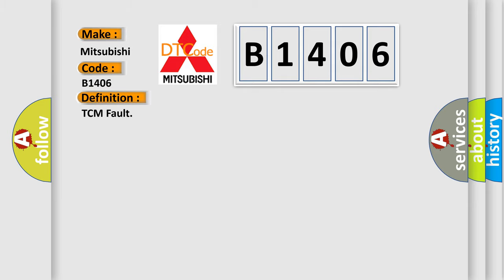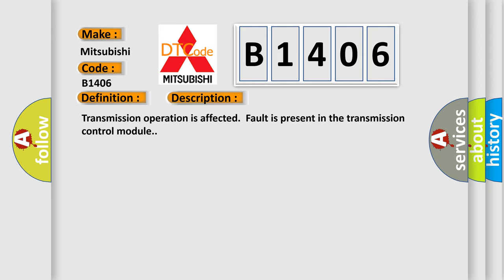The basic definition is TCM fault. And now this is a short description of this DTC code: Transmission operation is affected, fault is present in the transmission control module.